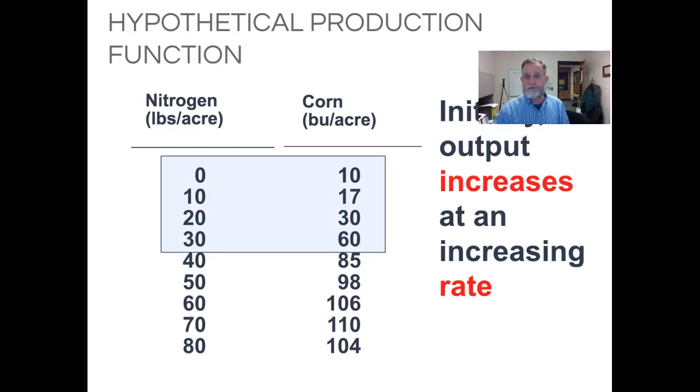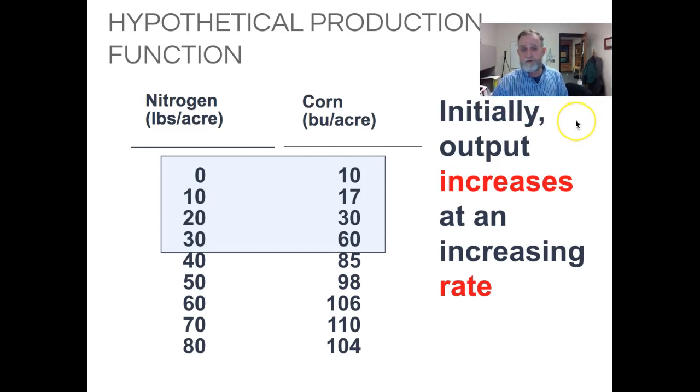From this data set, we can see some things that are happening. I'm going to graph it out here in portions. You can see that the nitrogen that I apply is in 10 pound increments per acre. I'm going to increase from 0 to 10, 10 to 20, and 20 to 30. And this is the result of the output, holding all other variables constant, is that I'm going to see a production of 10, and then it jumps to 17, and then it jumps to 30, and then it jumps to 60. This is the typical production response in the initial portion of a production function that we see - the initial output increases at an increasing rate.